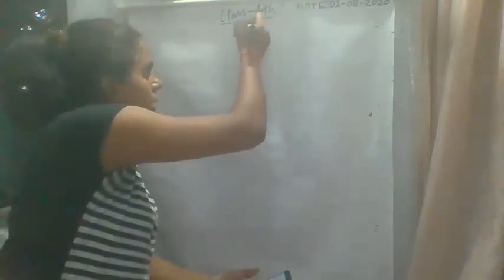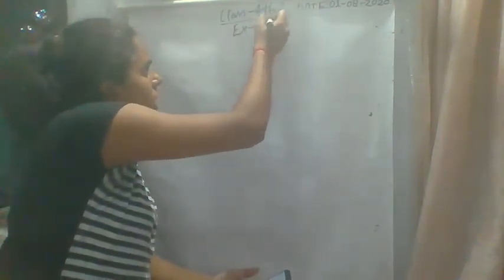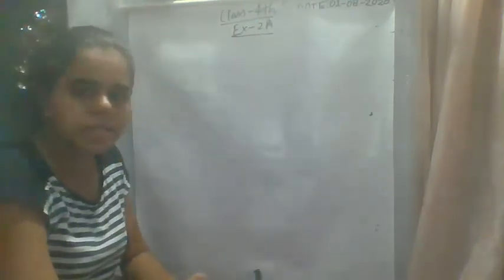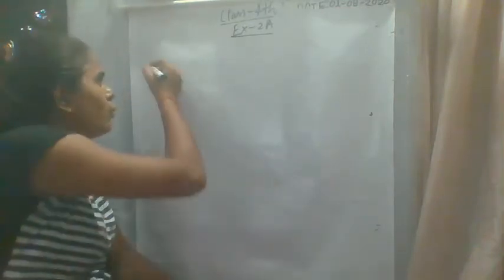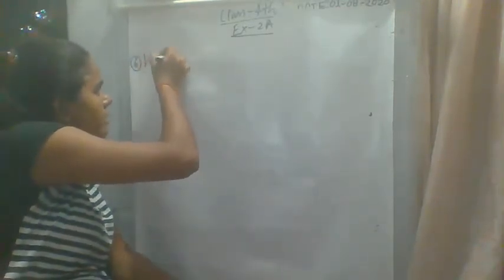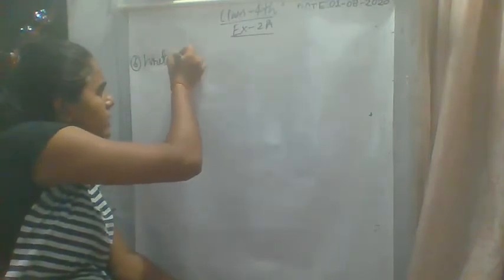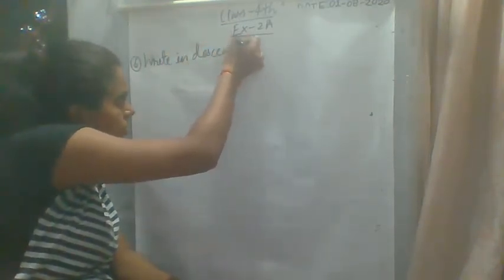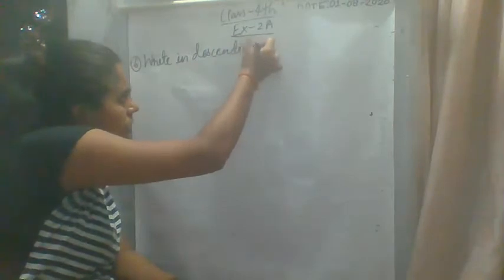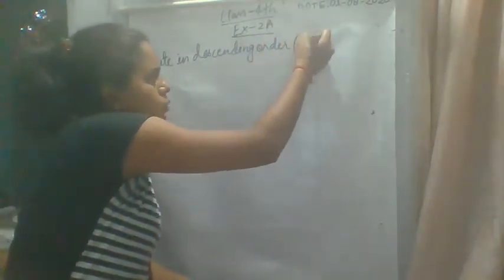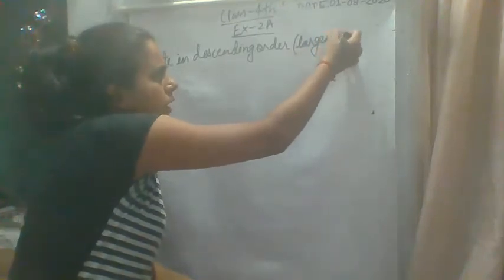So what is question number 6? Question number 6 is: write in descending order. So what is descending order? Descending order is largest to smallest.